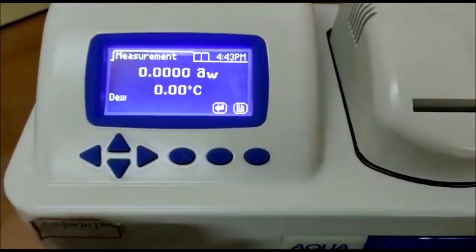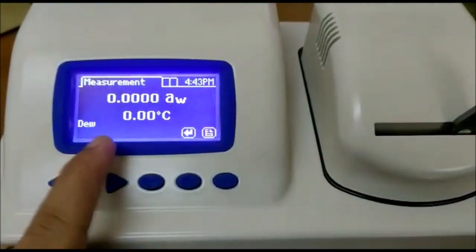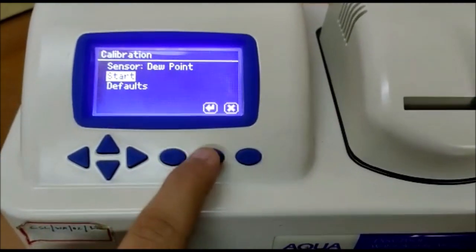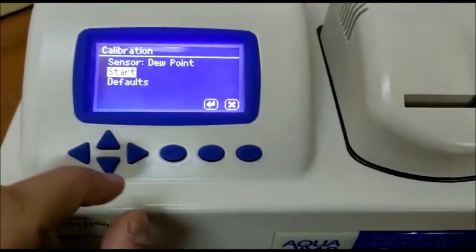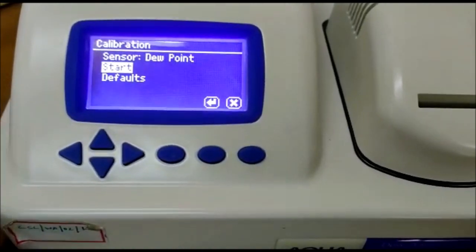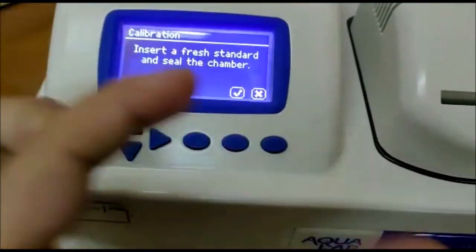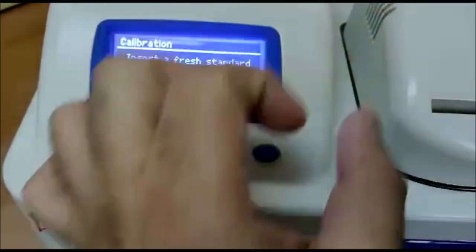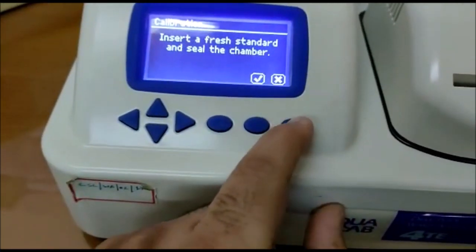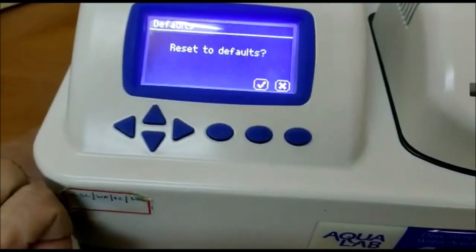Moving on to the instrument features. You can do calibration which can be done by two ways. You can either use the vials for calibration or you can set it to default. For vials you just have to insert the vial into the chamber and then start the test and it will read and you can change the offsets. And default will set the factory calibration.